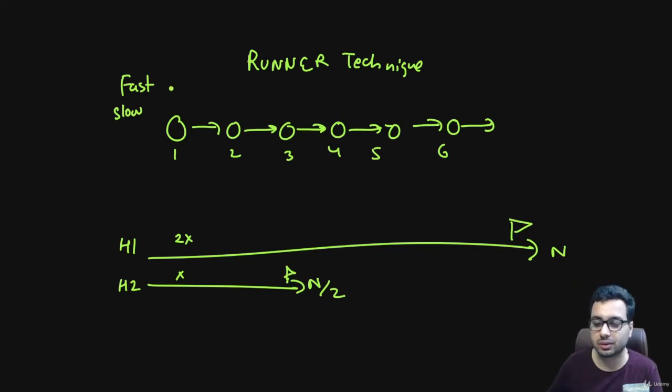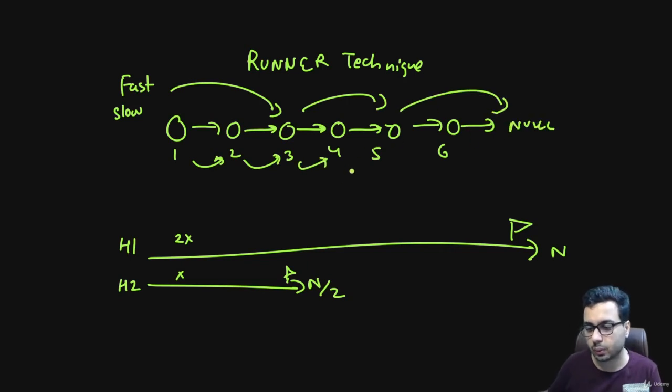We are going to say, fast you take a jump of two, slow you take a jump of one. Fast take a jump of two, slow take a jump of one. Fast take a jump of two which is null, and slow takes a jump of one and reaches the midpoint.